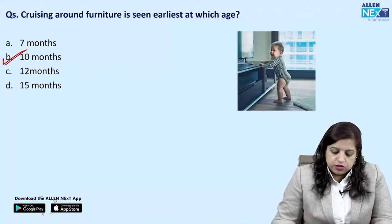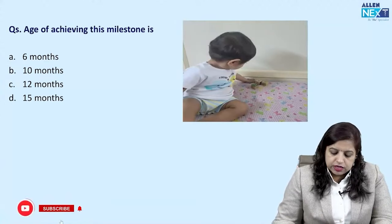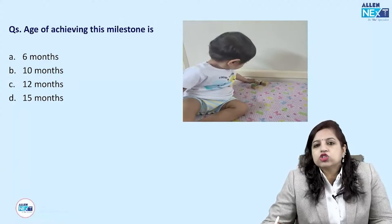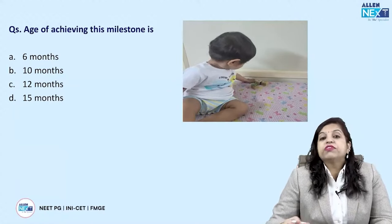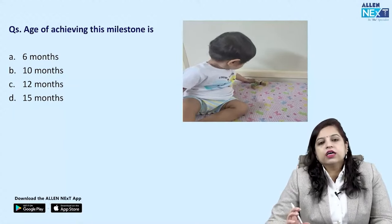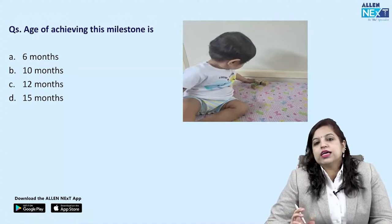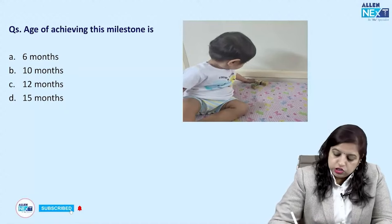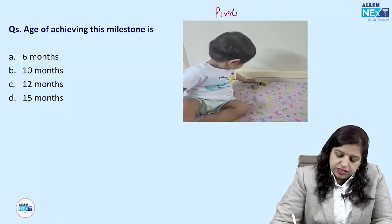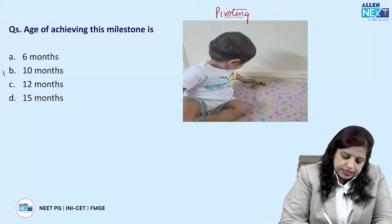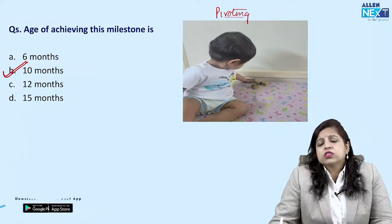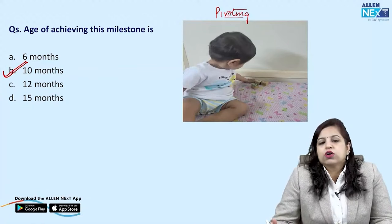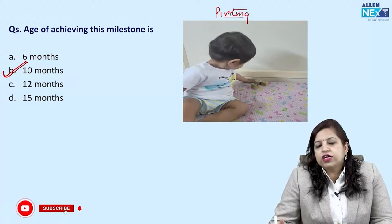The next developmental milestone is pivoting. Pivoting means turning around keeping the gluteal region as a base and twisting the upper body on the gluteal region. Pivoting also occurs at 10 months of age. So 10 months of age is very significant in the first year of life — many milestones are gained then.